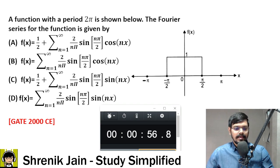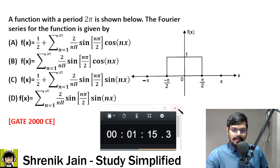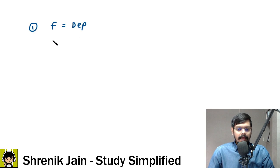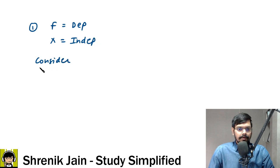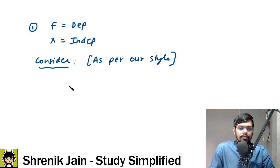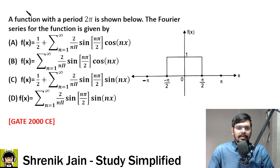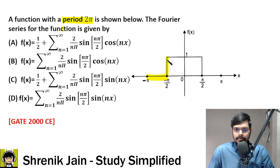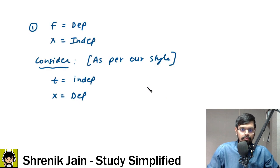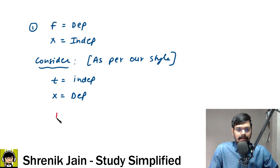Svein is saying the answer is A — that is absolutely correct. As per the question, f is the dependent variable and x is the independent variable. But as per our calculation style, we are going to say T is the independent variable and x is the dependent variable. What else is given? The fundamental time period is 2 pi, and the graph is working from minus pi to pi. So from the graph also, we can see that T is equal to 2 pi.